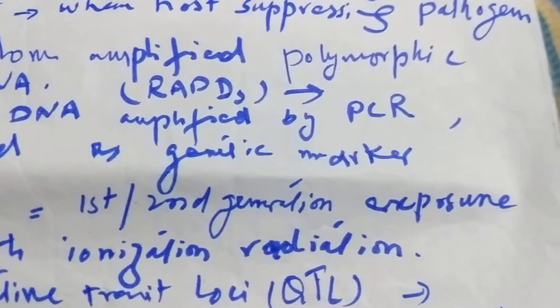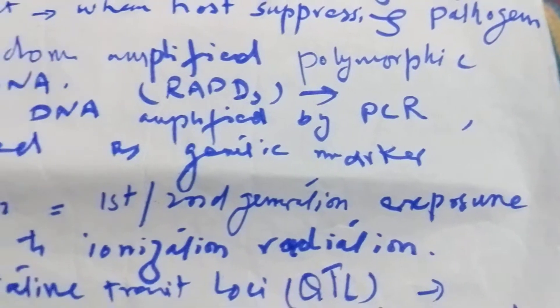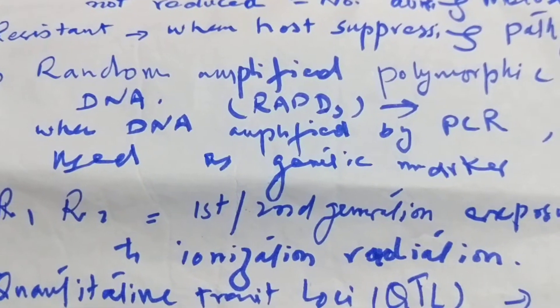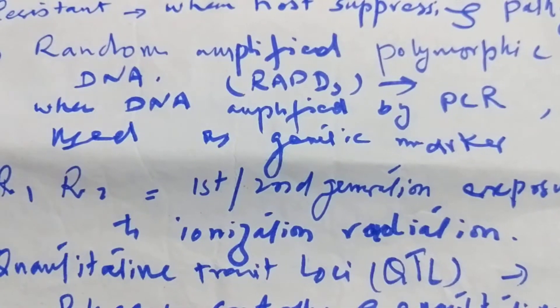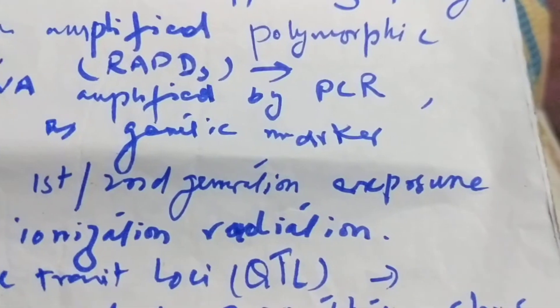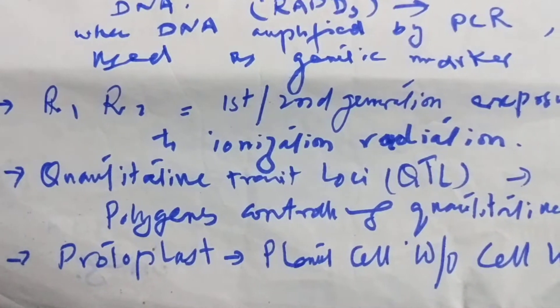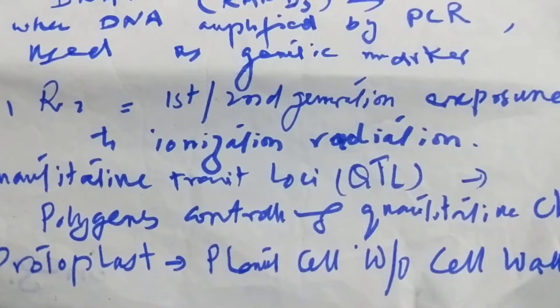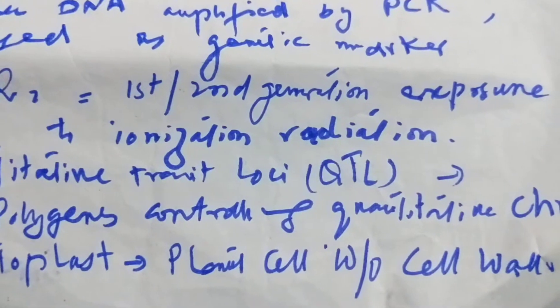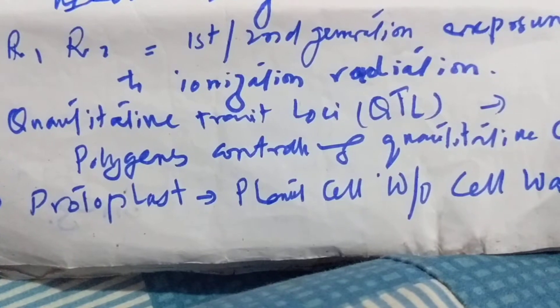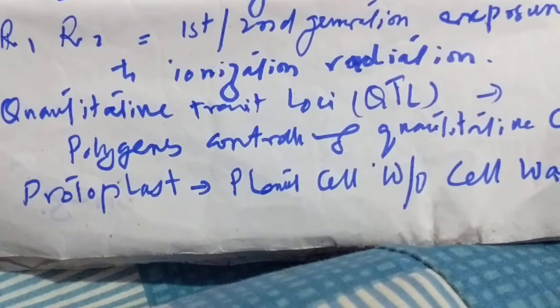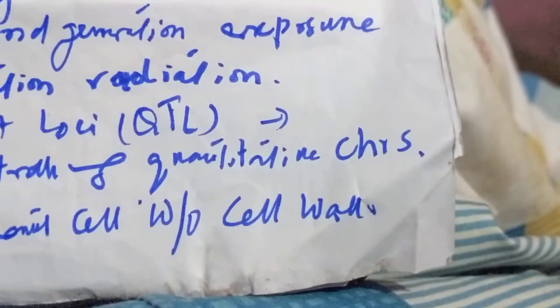Random Amplified Polymorphic DNA (RAPD) is when DNA is amplified by PCR and used as a genetic marker. R1, R2, etc. refer to the first or second generation exposure to ionizing radiation. Quantitative Trait Loci (QTL) are polygenes controlling quantitative characters.